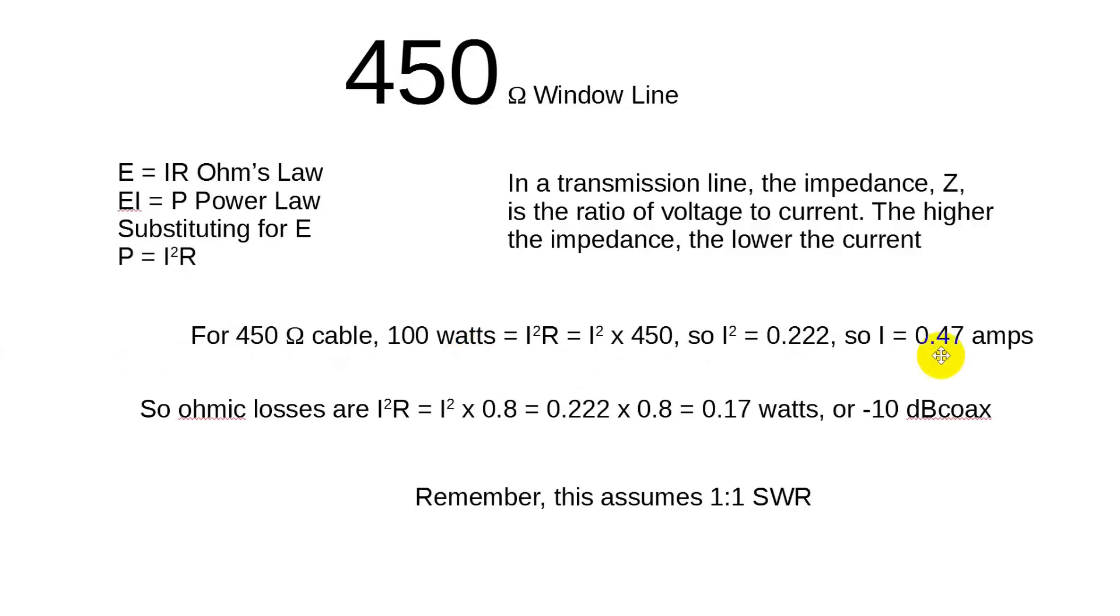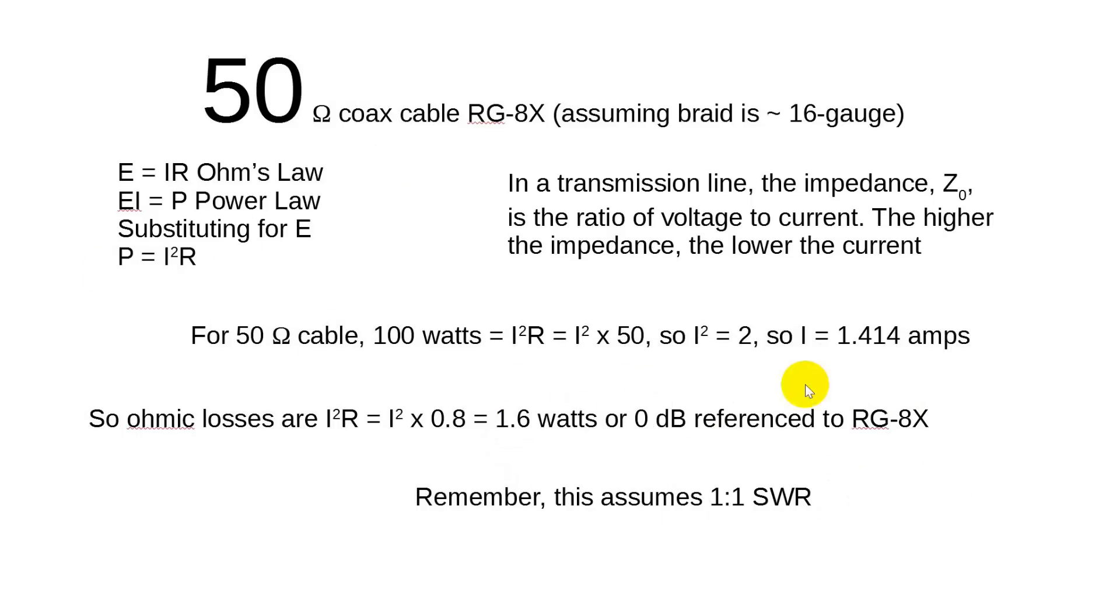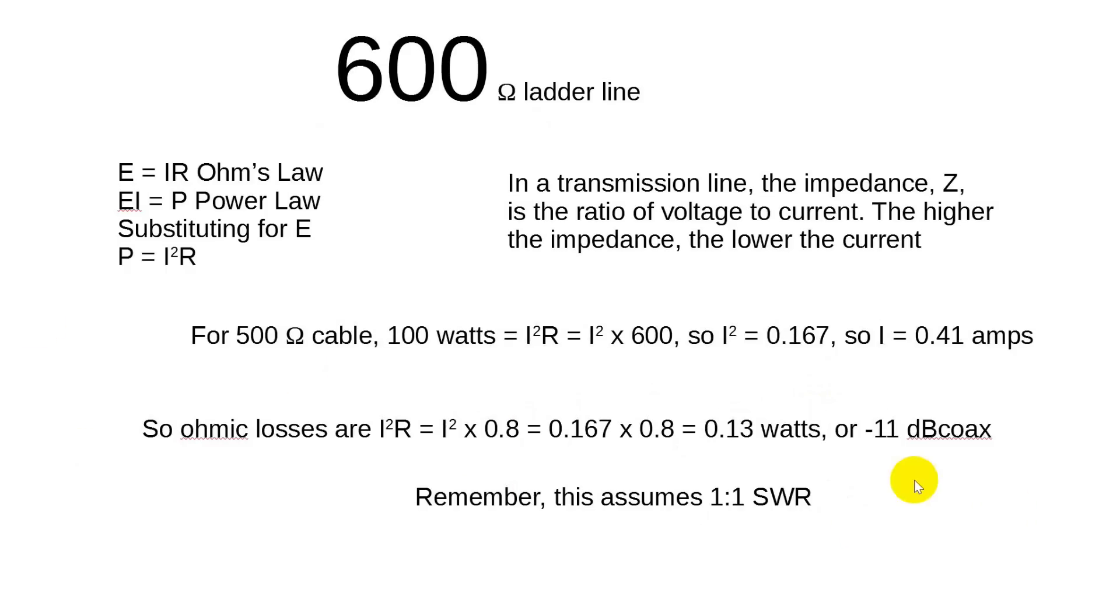For 450 ohms, we've got a little under half an amp. So ohmic losses are 0.17 watts, which is 10 dB less than the coax. Again, the assumption of 1 to 1 SWR. And if we go to 600-ohm ladder line, we pick up another dB. So we're 11 dB less than the coax. It's 0.13 watts compared to 1.6 watts. So that's where we get the minus 11 dB.